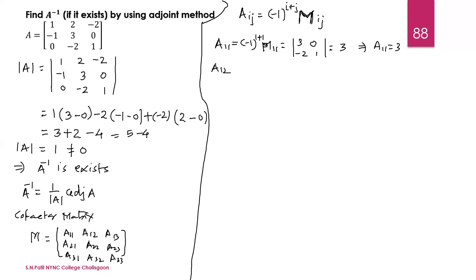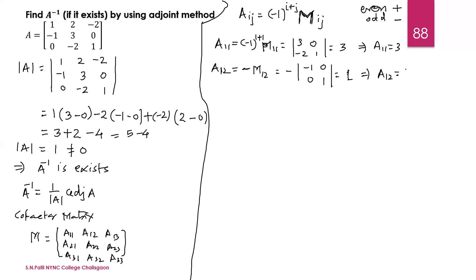Now A12: the sign is minus 1 raised to 1 plus 2, which is odd, so the sign is negative. Minus M12, where M12 is the minor of the first row, second column element, obtained by deleting that row and column. The submatrix is minus 1, 0 and 0, 1. The determinant is minus 1 minus 0, which is minus 1. With the negative sign outside, A12 equals 1.